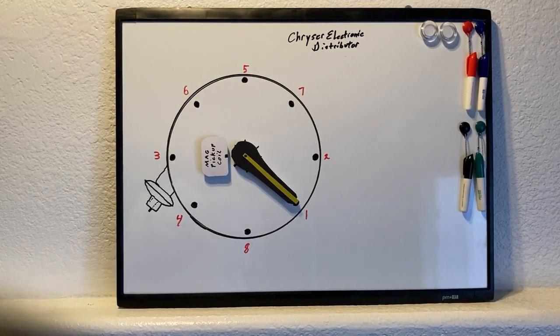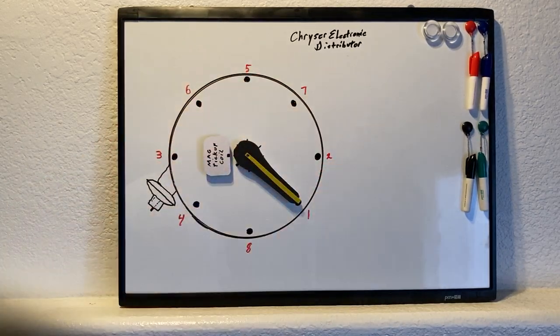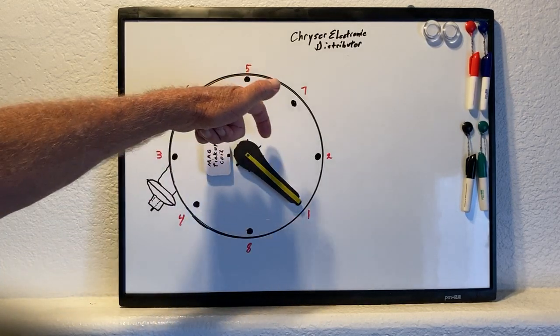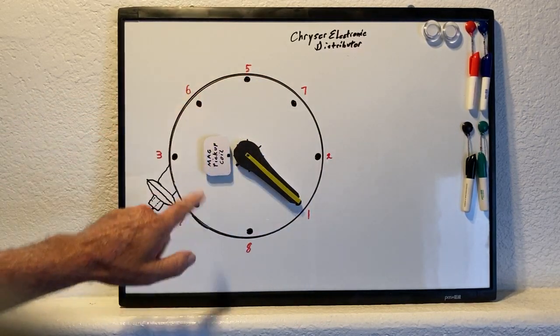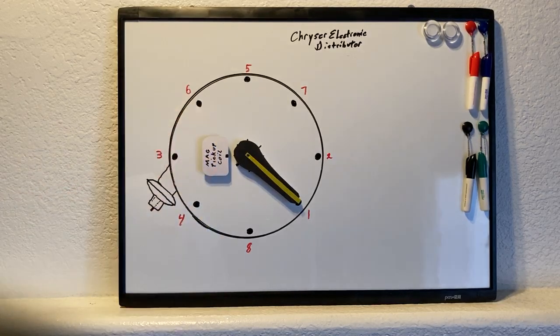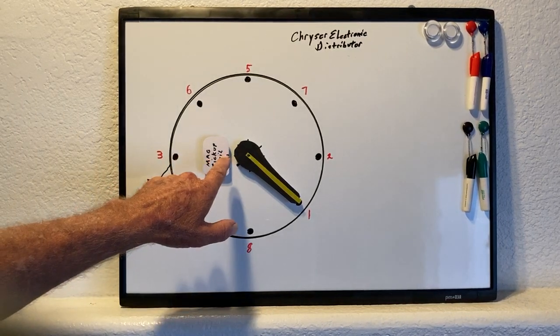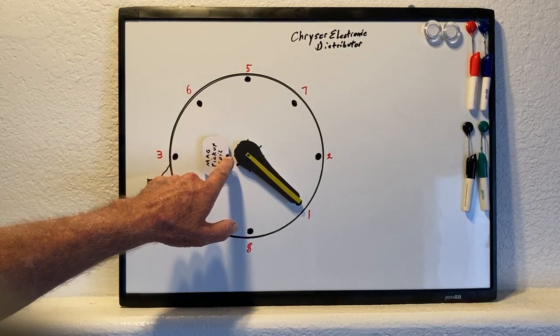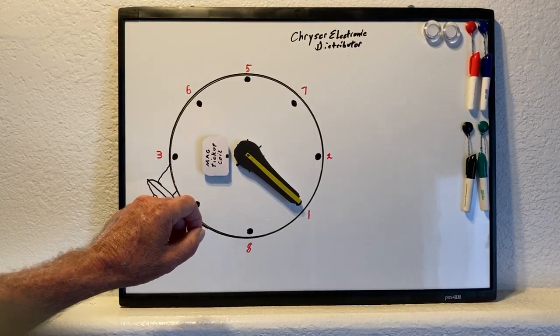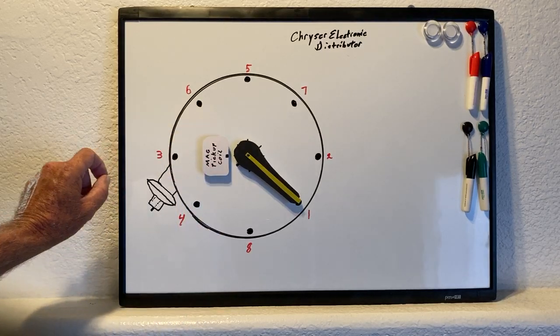The firing order is 1-8-4-3-6-5-7-2. We have our rotor, our reluctor with the little vanes, and here's our pickup coil which can be moved. The pickup coil point is right in the center of the coil. You'll see the little vertical metal bar in there, and that bar is magnetic.